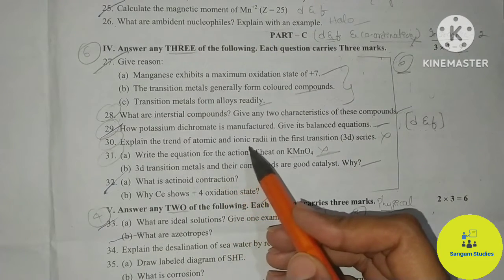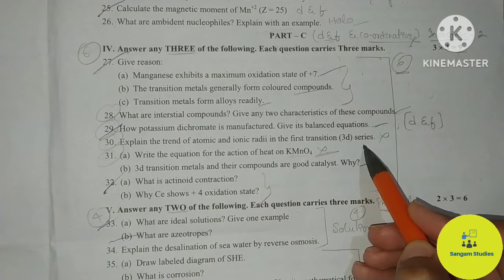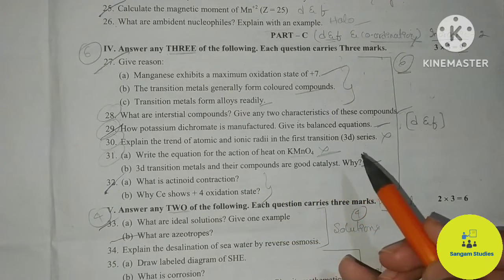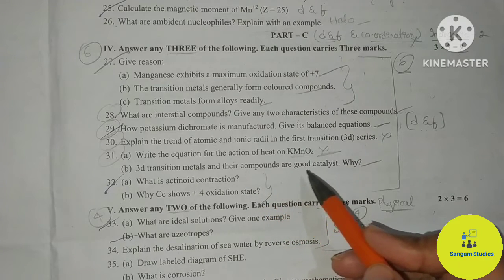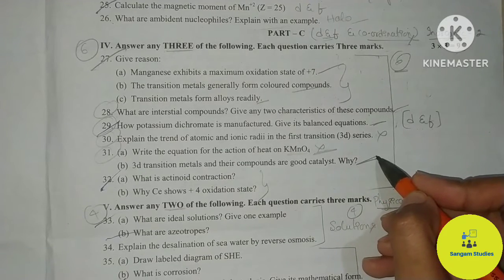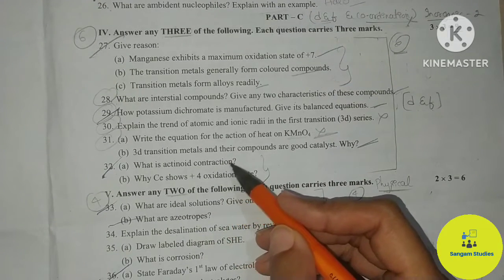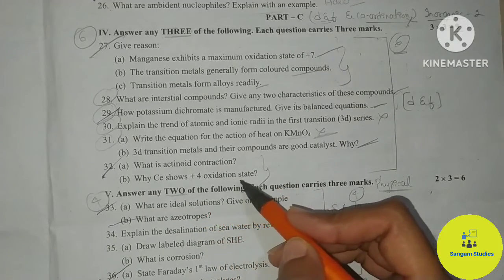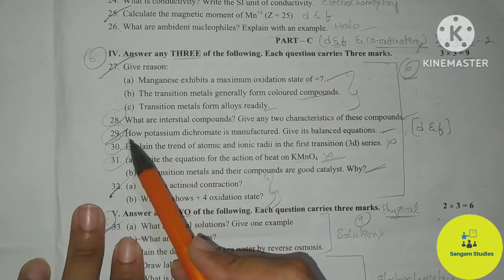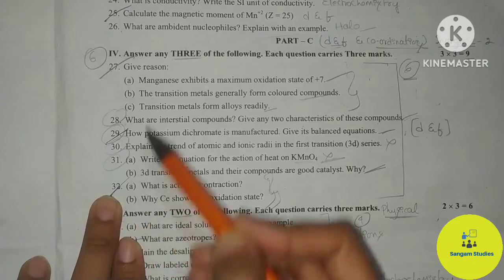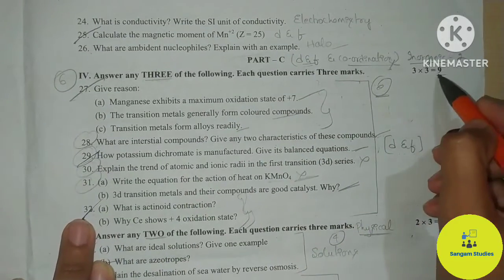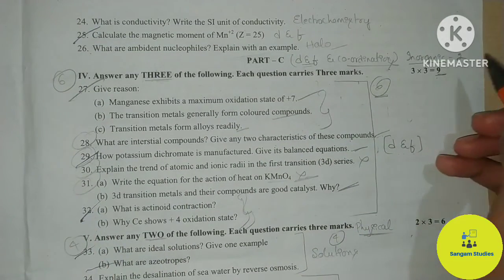The trend of atomic and ionic radii in the first transition 3D series is asked. Write the equation for the action of heat on KMnO₄. 3D transition metals and their compounds are good catalysts — give reason type. Next question: What is actinide contraction? Why does Ce show +4 oxidation state? These are also direct questions. So questions 27, 28, 29 and 30 are direct questions — 4 direct questions. You need to answer 4 questions in this section and your score will be 9.